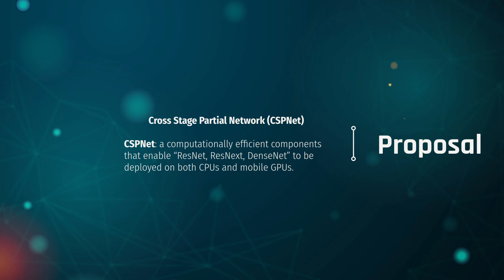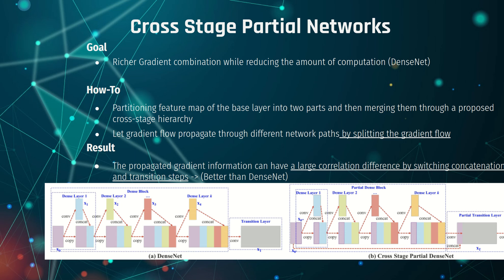That is exactly the proposal for CSPNet. The acronym is cross-stage partial network. CSPNet is a computationally efficient component that can enable different backbones — for example, ResNet, ResNeXt, and DenseNet. Once you apply CSPNet into your backbone, you can deliver on both CPUs and mobile GPU devices, which is exactly what we want: edge devices that can run applications as efficiently and as fast as possible.